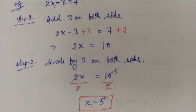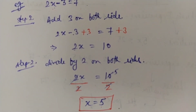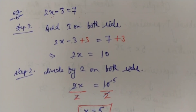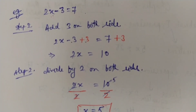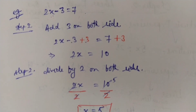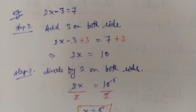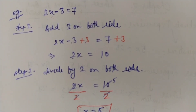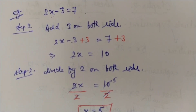So you get the value of the variable. You should put that value back into the original equation to verify — if it satisfies the equation, your solution is correct.